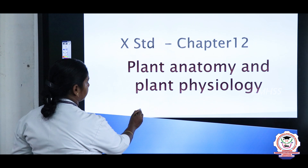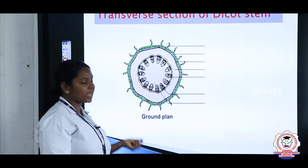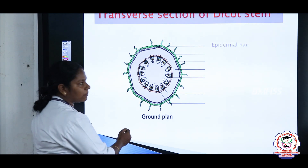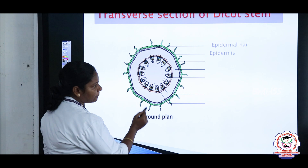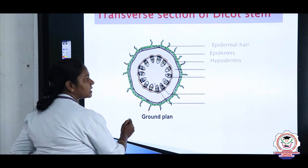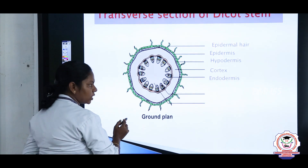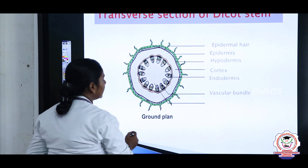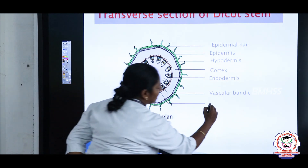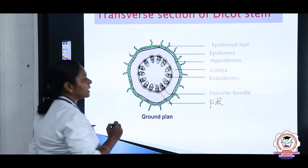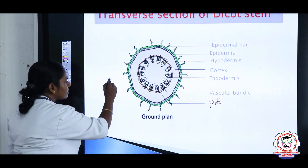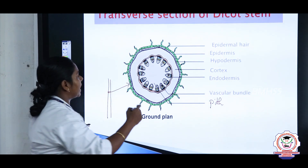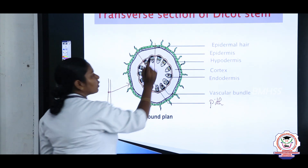This is the ground plant. If you cut a stem, it will look like this. We are going to discuss the parts and then their functions. The first part is epidermal hair, next is epidermis, then hypodermis, then cortex, then endodermis. The vascular bundle is arranged in the form of a ring and the center portion is the pith.